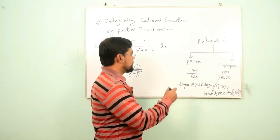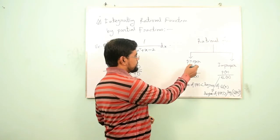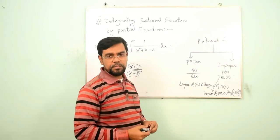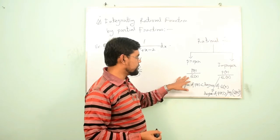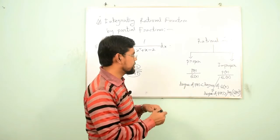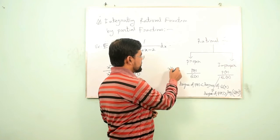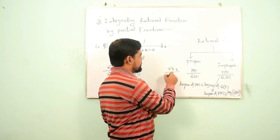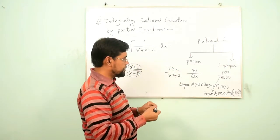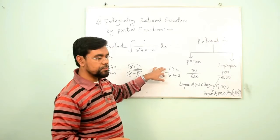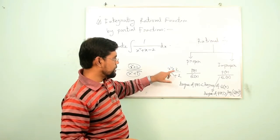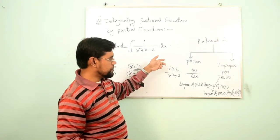What is proper? If the degree of the numerator is less than the degree of its denominator, then it is called proper. For example, (x² + 2) divided by (x³ + 2) — the degree of the numerator is 2 and the denominator is 3, so this one is proper. The opposite is improper.